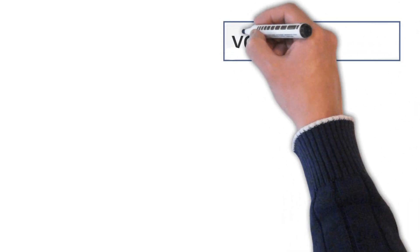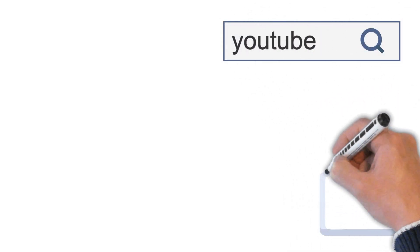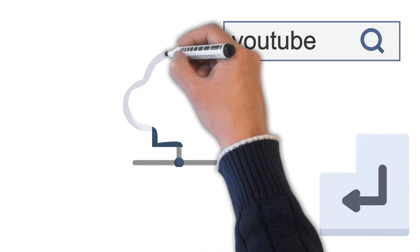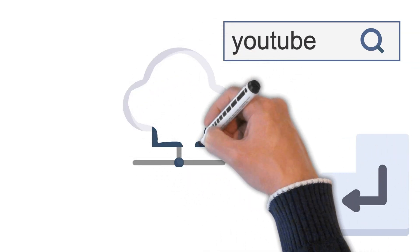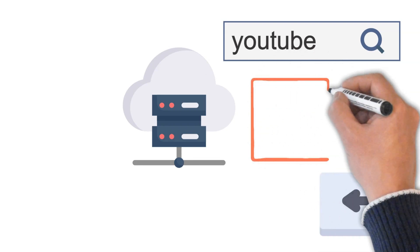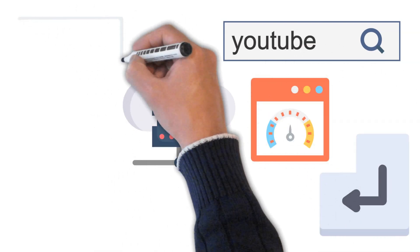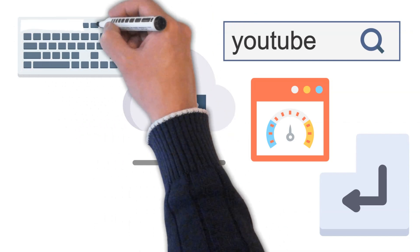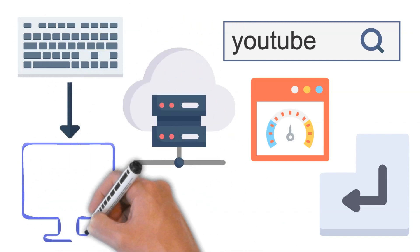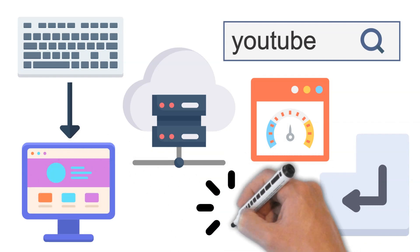Ever wonder what really happens when you type something like YouTube into your browser and hit enter? Behind that simple action, a whole chain of invisible processes kicks off — networks, servers, encryption, and more — all working in milliseconds to bring you a web page. In this video, we'll break down each step of that journey, from your keyboard to the fully loaded site on your screen.